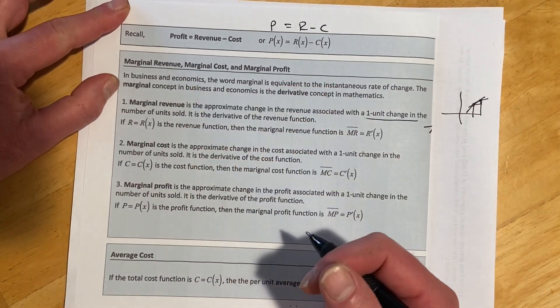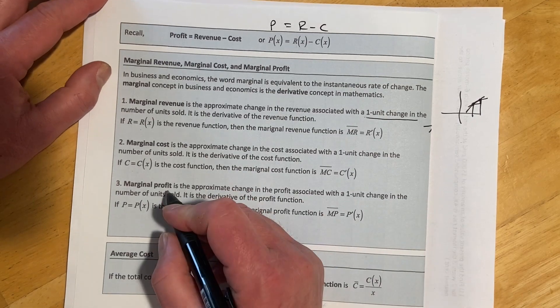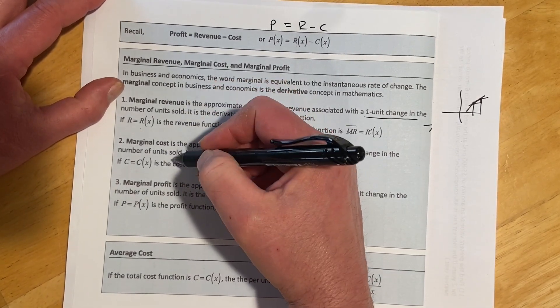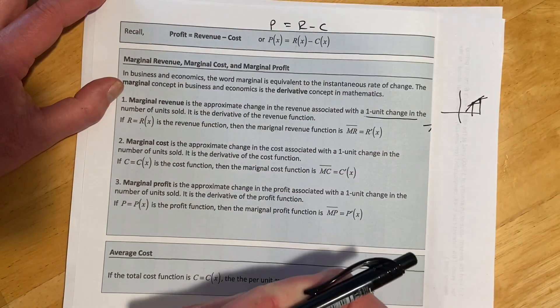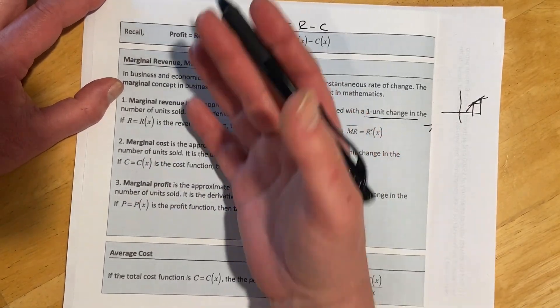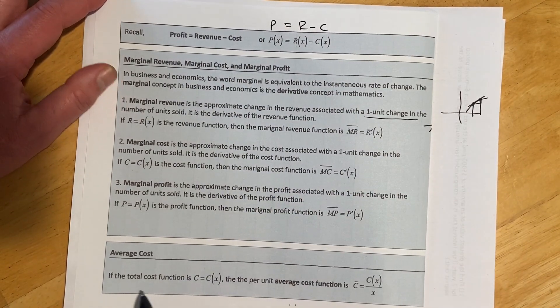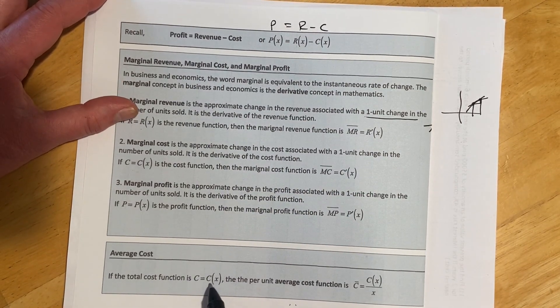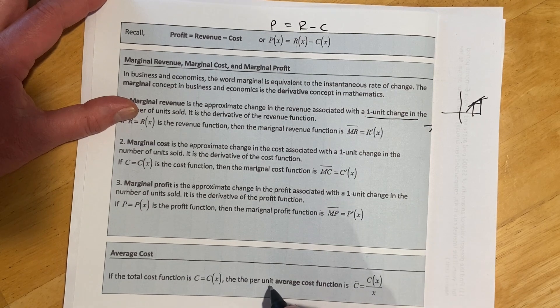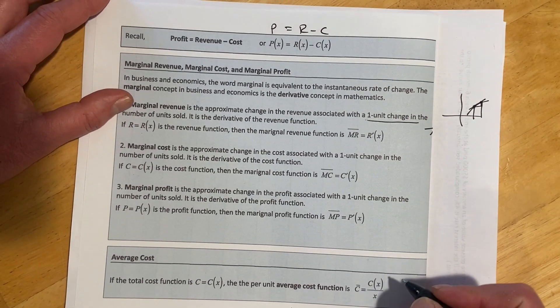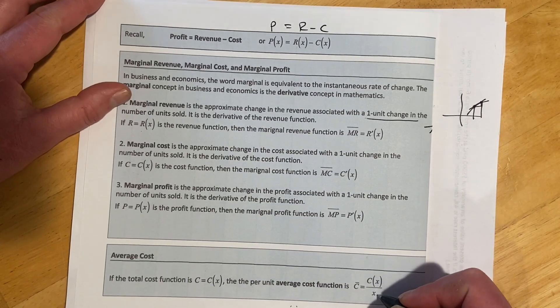Marginal cost and marginal profit, exact same idea as the revenue. And to find marginal profit, we can generate a profit equation first out of these and then take the derivative of that rather than doing the derivative of each of these separate. Last thing to talk about is average cost. So if our cost function is c of x, then the per unit average cost function is going to be c bar equals c of x over x.